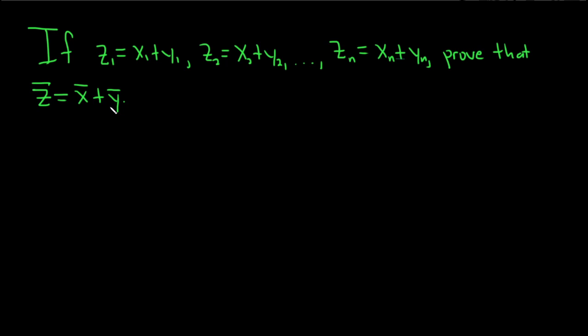In this problem, we're going to prove that if we have Z1 equals X1 plus Y1, Z2 equals X2 plus Y2, all the way to Zn equals Xn plus Yn, that the mean of the Zs is equal to the mean of the Xs plus the mean of the Ys.